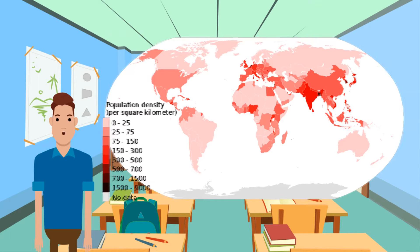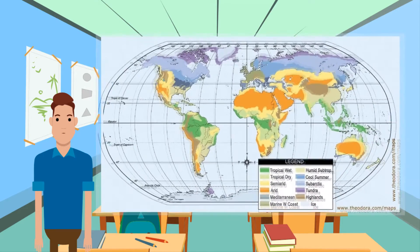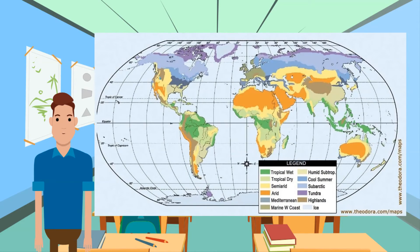Physical factors determine population distribution. Climate is an important factor — there tends to be denser population where climate favours agriculture. Very dry and cold areas can support only a sparse population. Outside the tropics, mountains are sparsely populated. Fertile soils and water encourage high population densities. Inaccessibility makes rainforest sparsely populated.